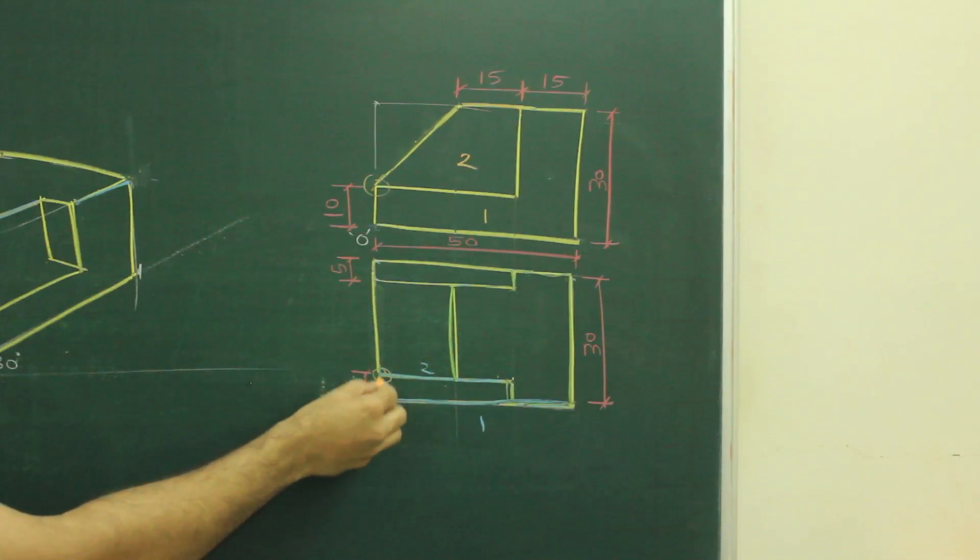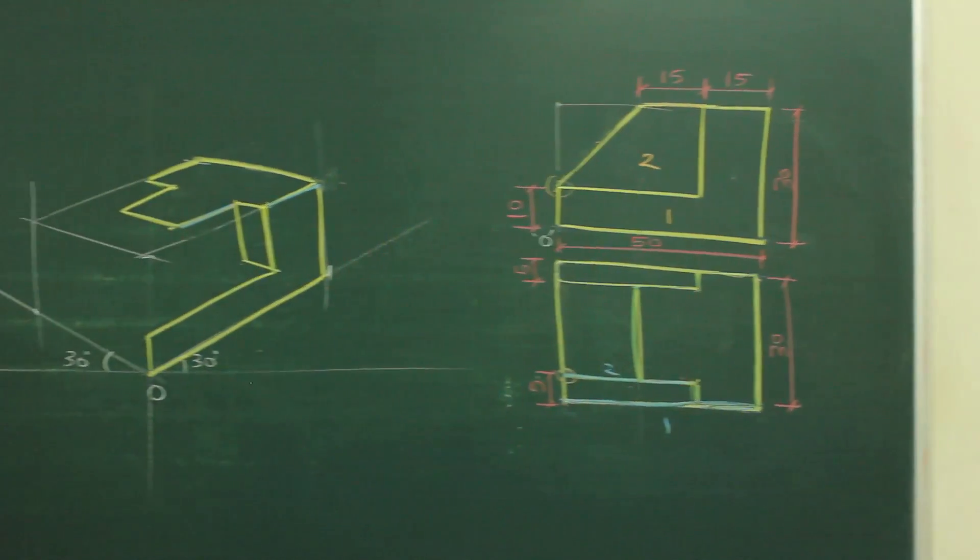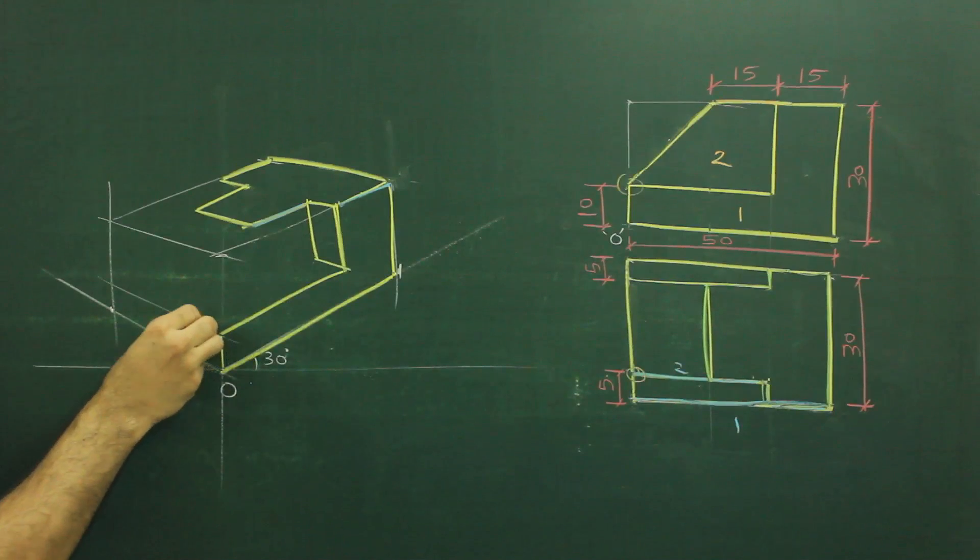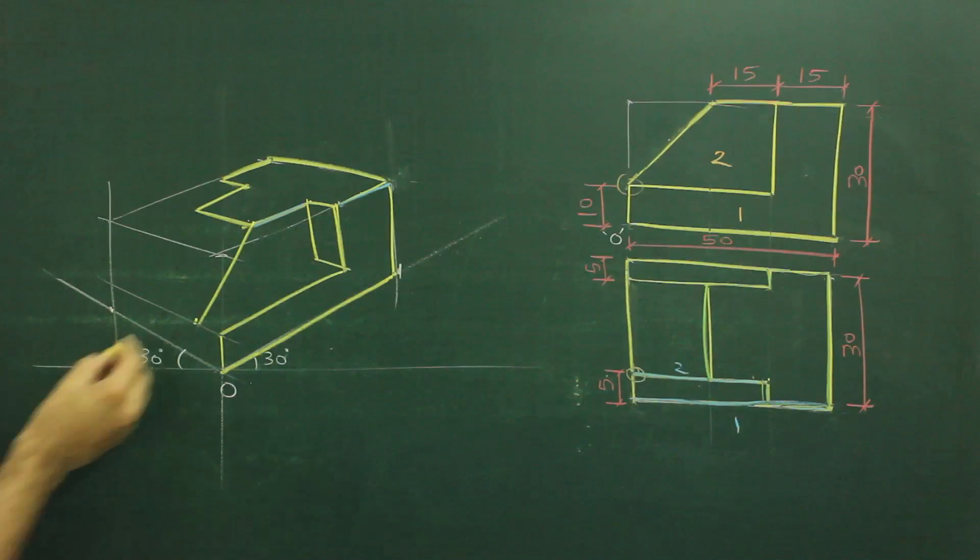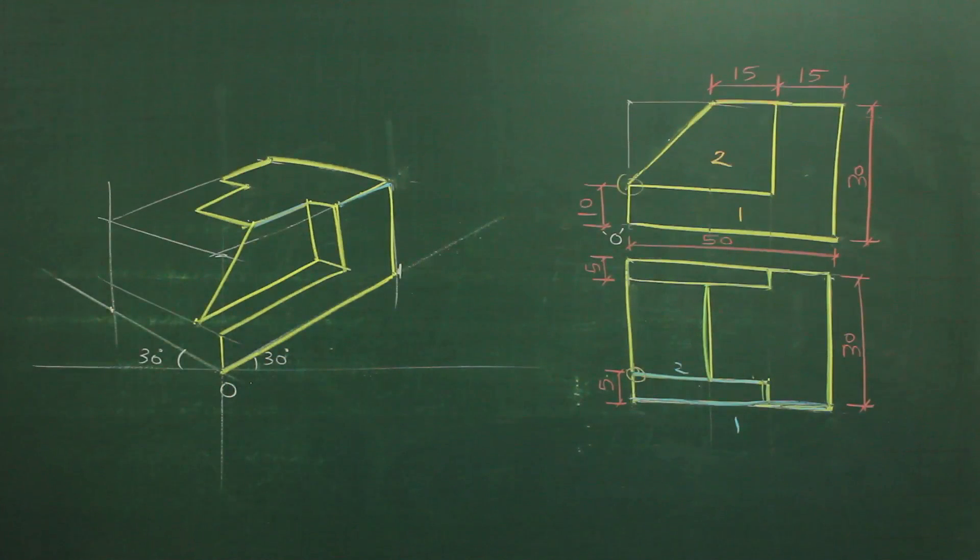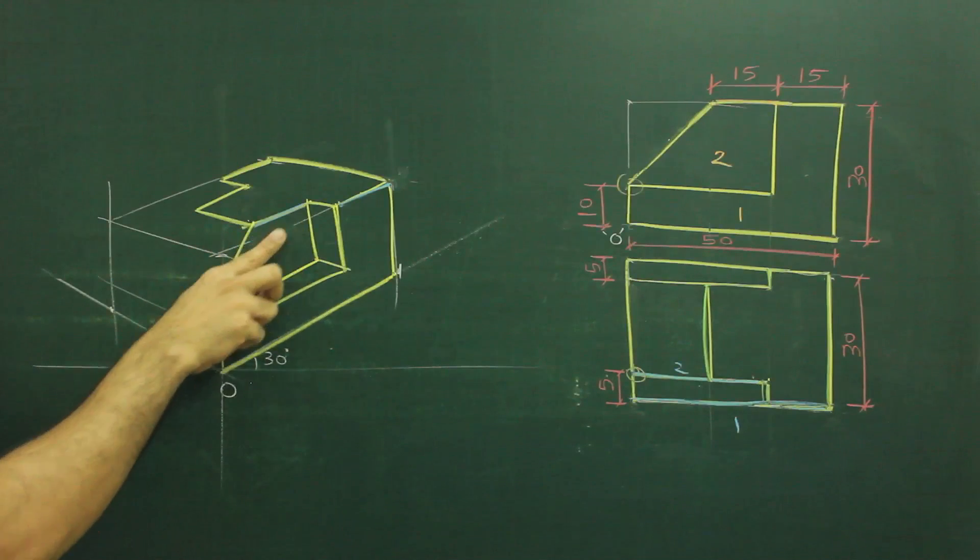So we need to go how much behind? 5. So what we will do? We will draw a line. We will go behind by 5. And then we will join this. So if you extend this line also, it will meet at the same point.